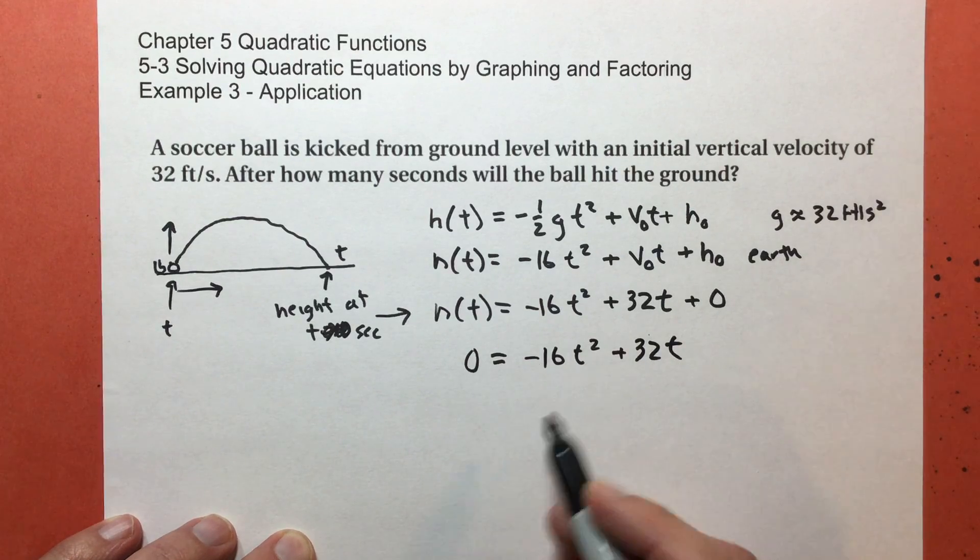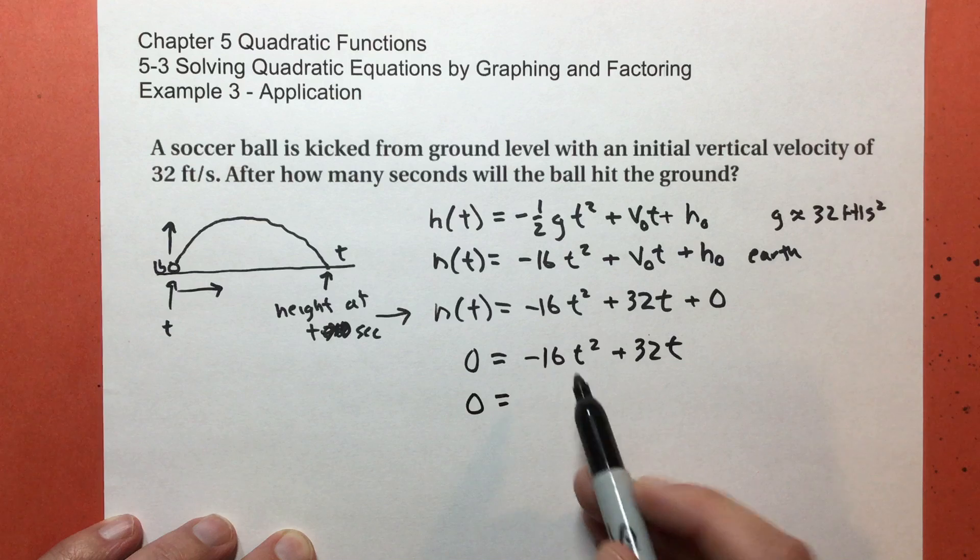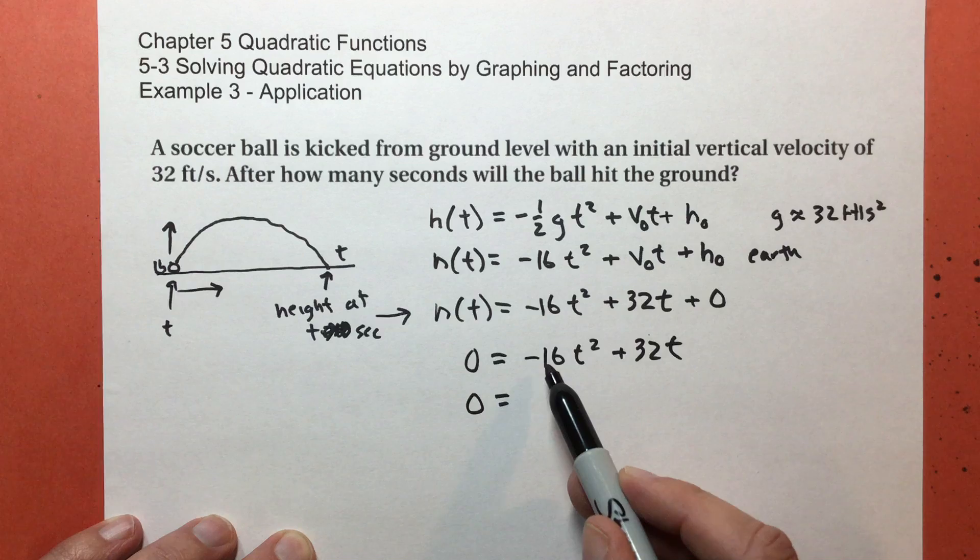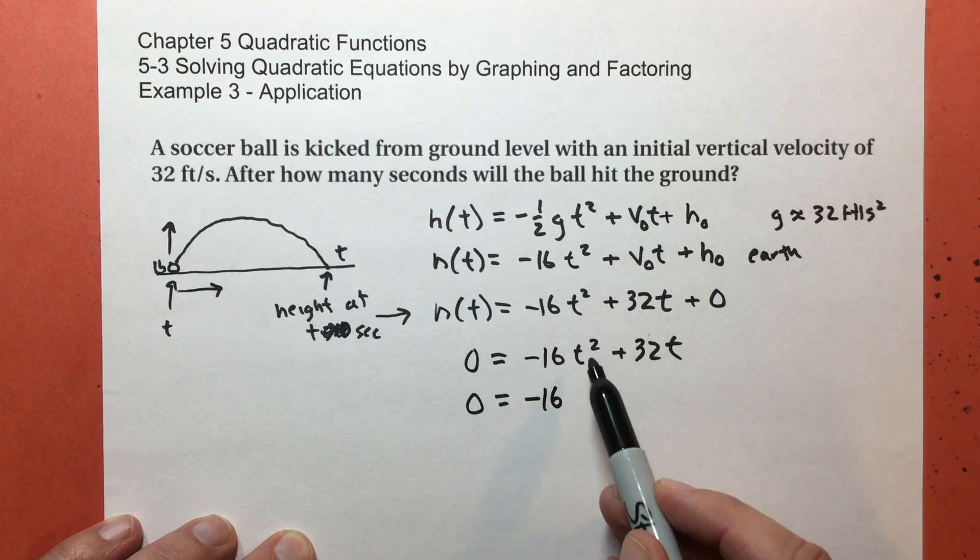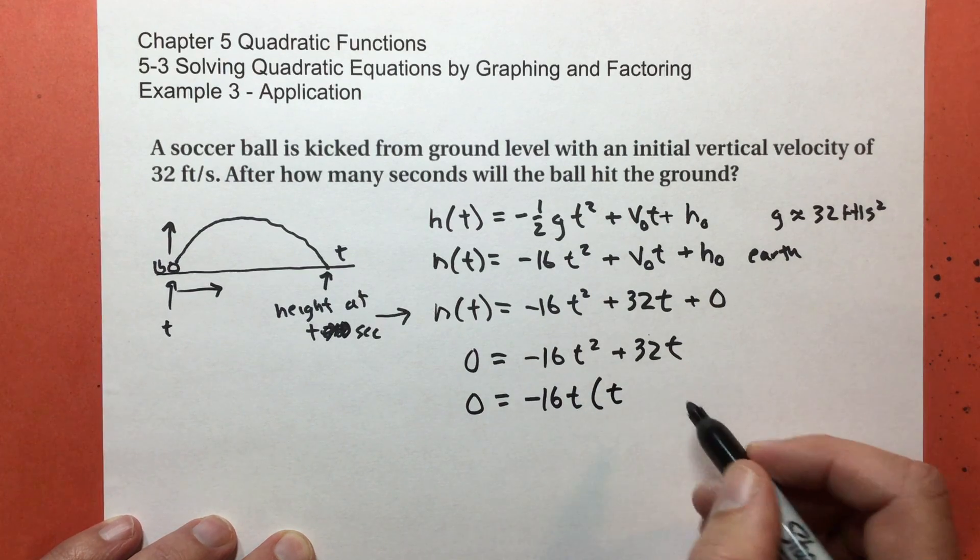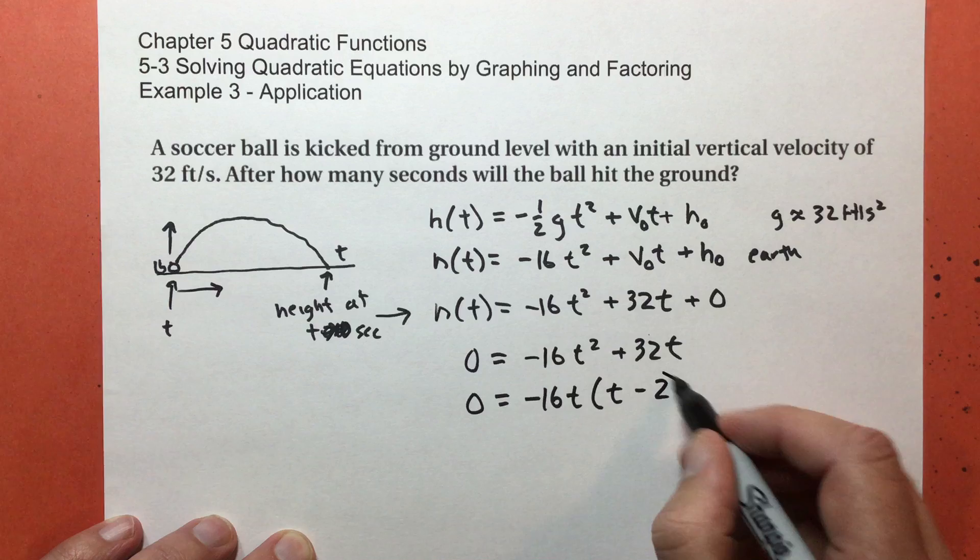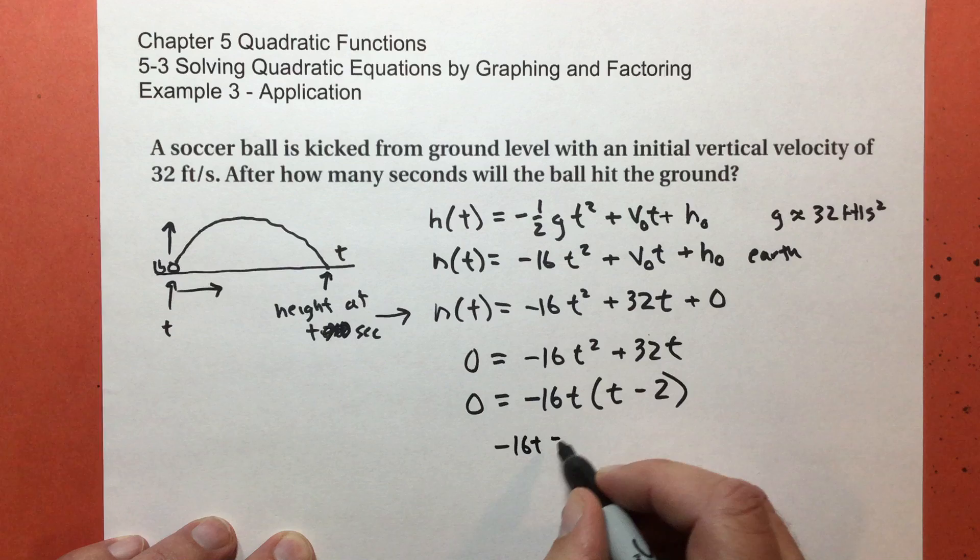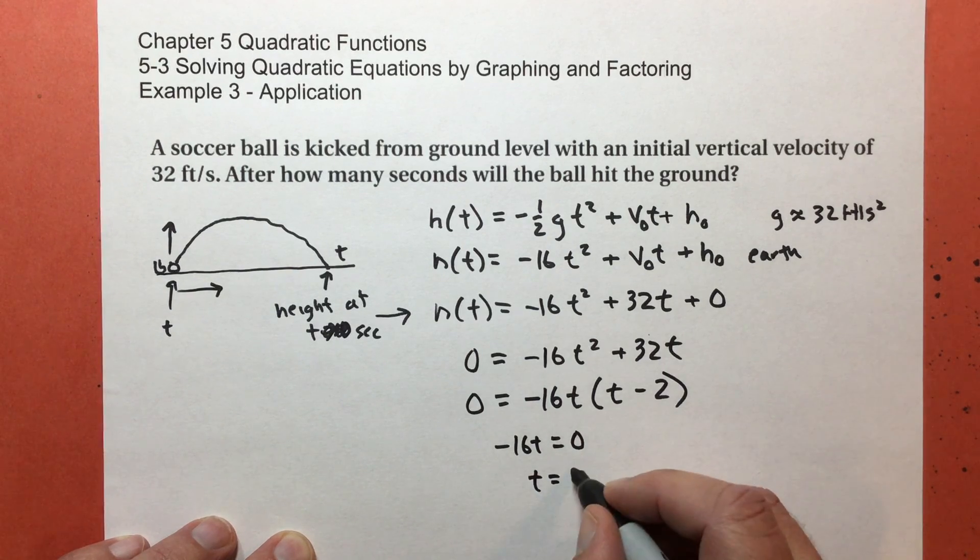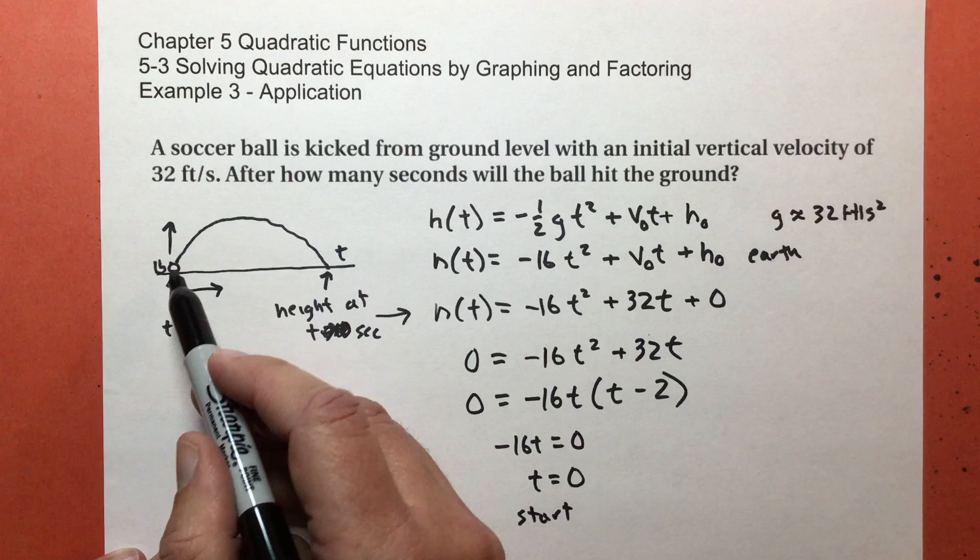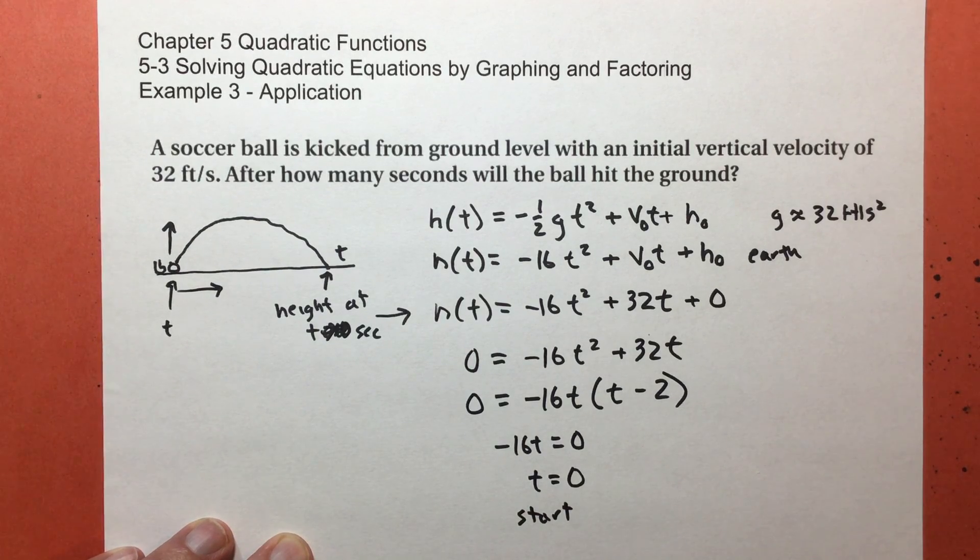This is negative 16 t squared plus 32 t. I'm going to factor this. So they both have a common factor of 16. However, I'm going to factor out a negative 16. So this is negative 16. They both have a t. That leaves the other t subtract 2. So that tells me negative 16 t equals zero. And of course, divide by negative 16, t equals zero. That's at the start, at the beginning. At zero seconds, the height is zero. That's where the ball was at the moment it gets kicked.